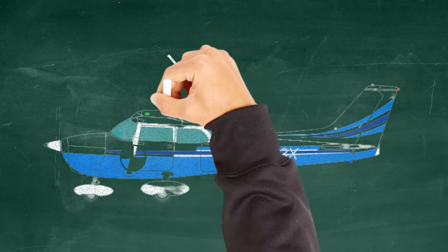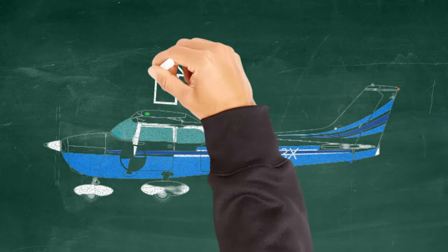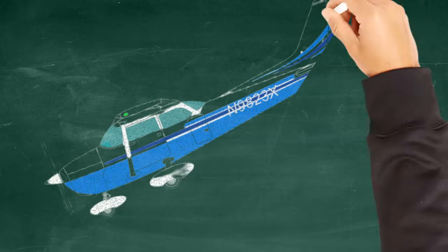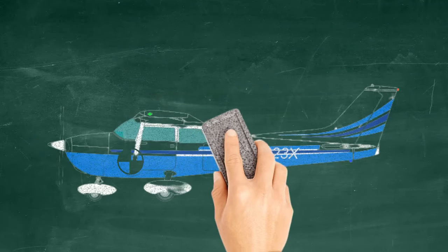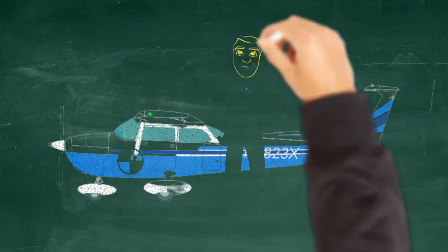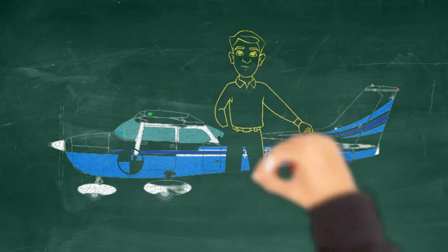Most airplanes are designed so that the center of gravity is in front of the center of lift, or the center of pressure. This intentionally makes our aircraft nose-heavy, and there's a special feature to help balance it out. The horizontal stabilizer on the tail of the airplane is designed with a slightly negative angle of attack, so it exerts a downward pressure.